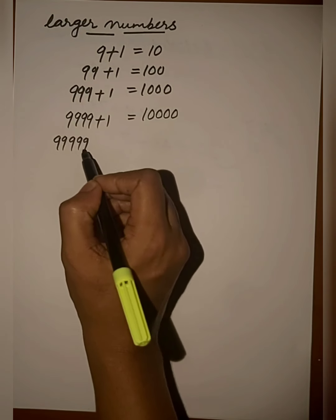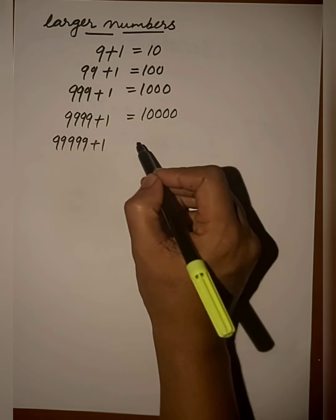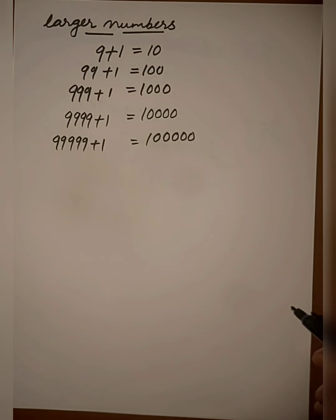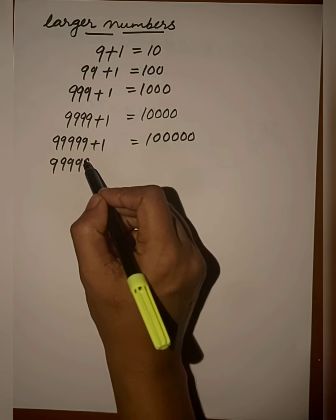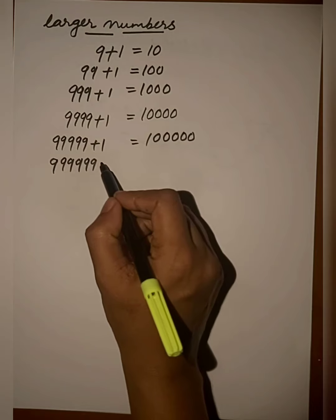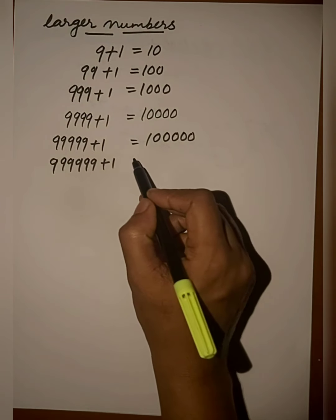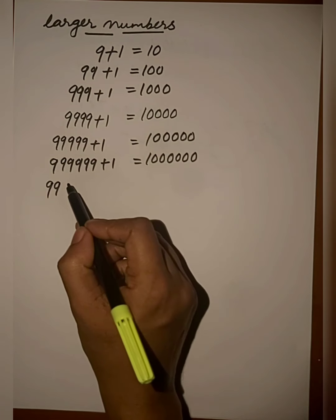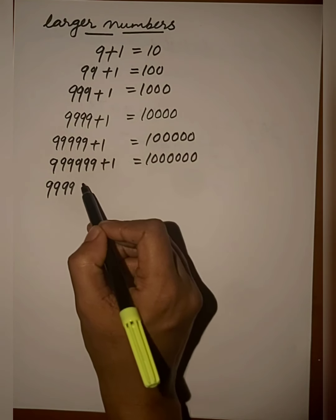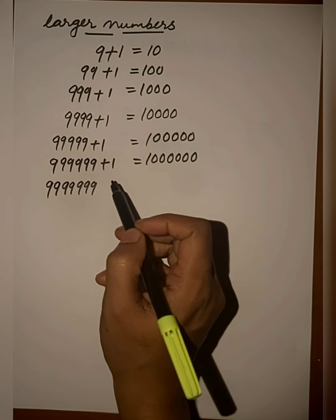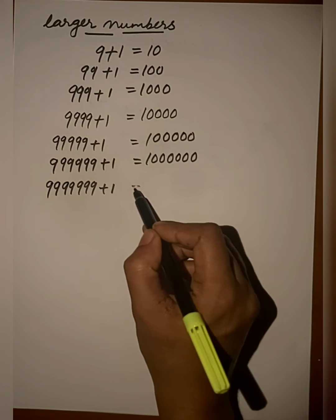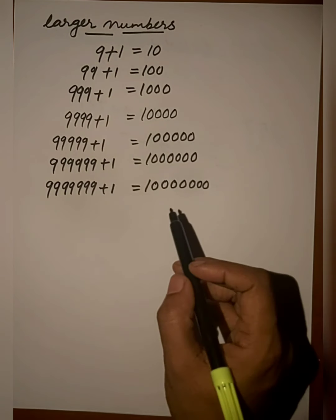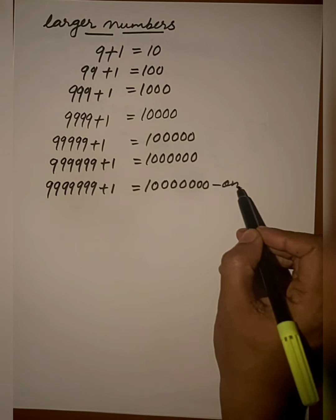99,999 plus 1 gives us 1,00,000, which is the smallest six-digit number. Continuing this pattern, 99,99,999 plus 1 gives us the smallest eight-digit number, which is called one crore.